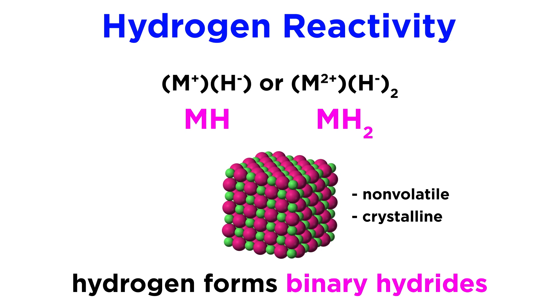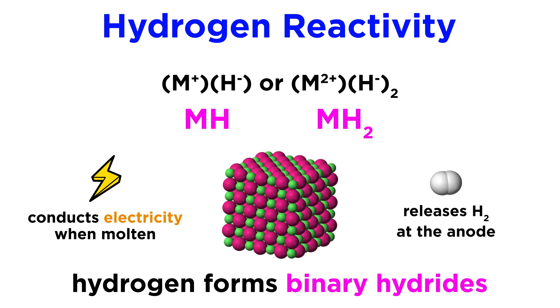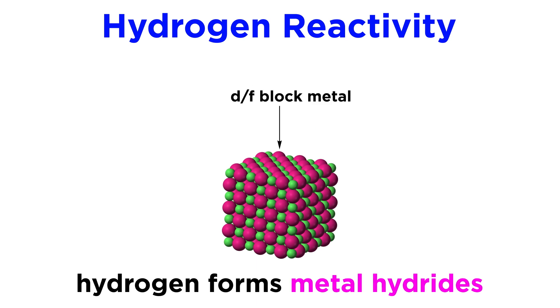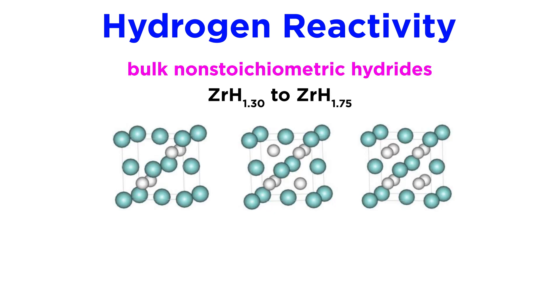The evidence for their formation is that they conduct electricity when molten, releasing hydrogen gas at the anode, or oxidizing electrode. Hydrogen will also form metal hydrides with D-block and F-block metals. First, there are bulk non-stoichiometric hydrides, where hydrogen atoms tuck into the metal lattice wherever they can fit,